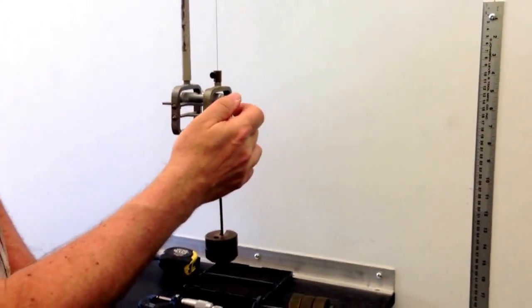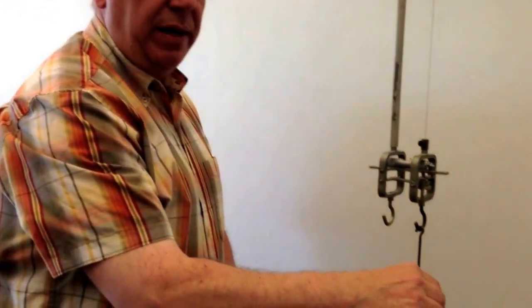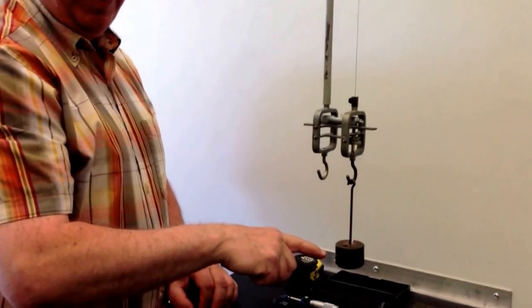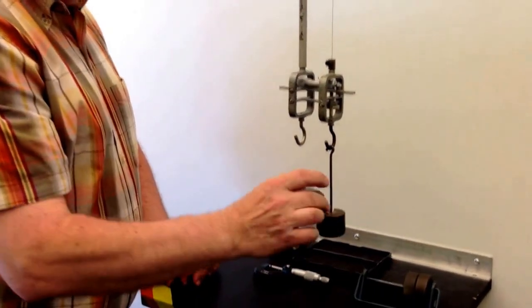So what you do is you turn the micrometer screw again a second time until you level it again. And you notice what the new reading is. And the difference between the new reading and the initial reading is the amount that the wire has stretched by applying, in this case, a total of 400 grams, 200 grams times two.